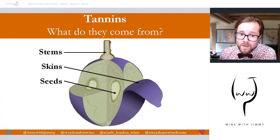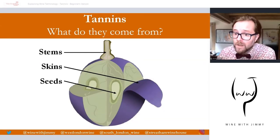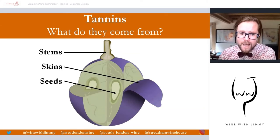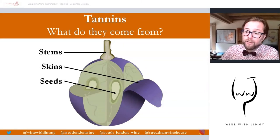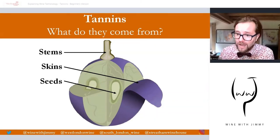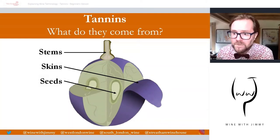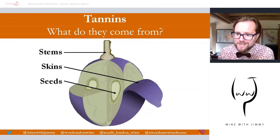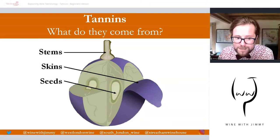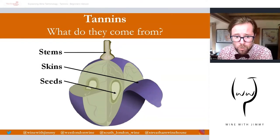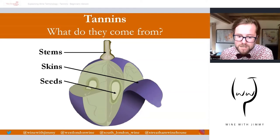Where do tannins come from in terms of wine? They come from the grape. The three S's are where we find tannins: stems, skins, and seeds — sometimes called 'pips' in English. All three contain amounts of tannin, and classically the most is found in the skins. Really, thinking about the plant defense, it's like a security system so that birds or animals can't get to the grape.